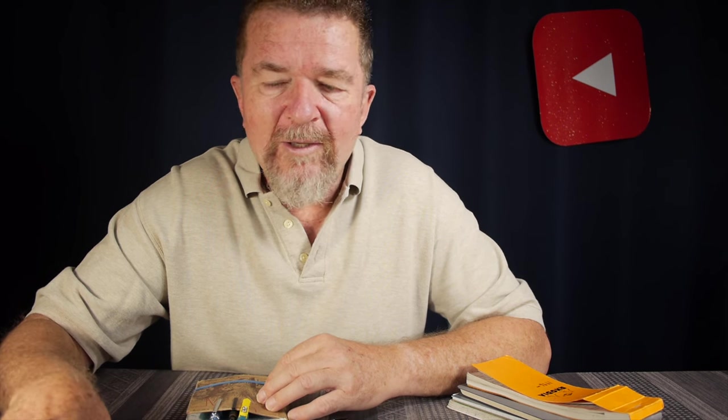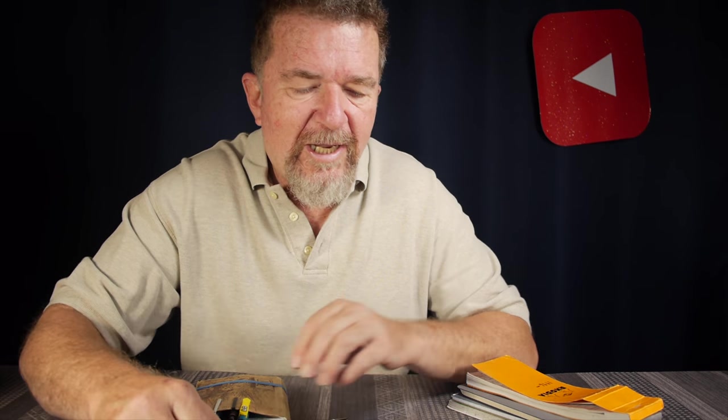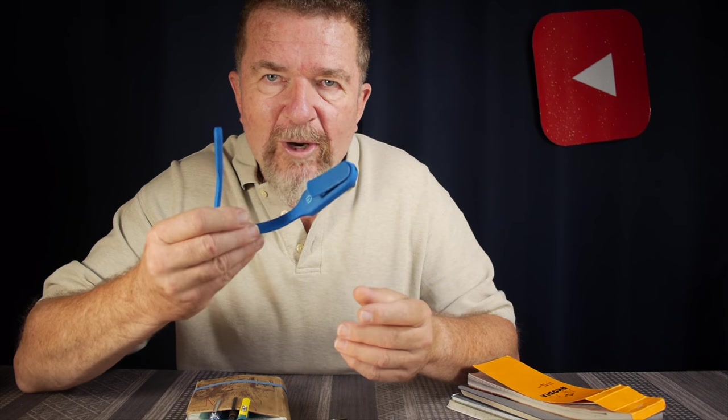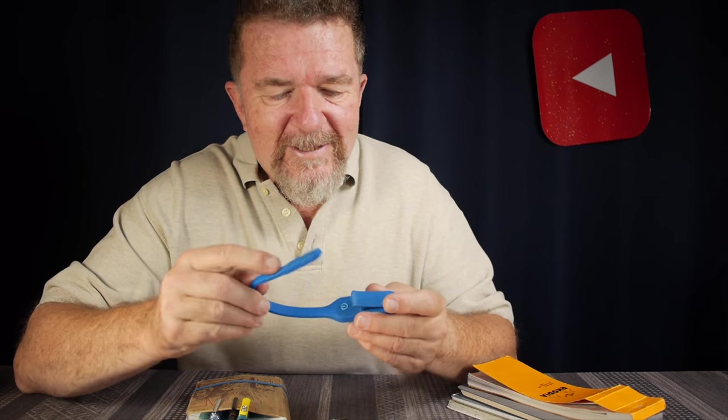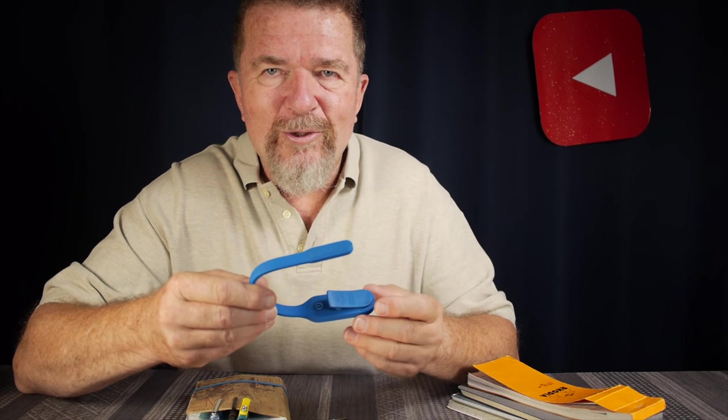Then what happened was yesterday, we went over to one of our local bookstores. This is Page One Books in Albuquerque. I had ordered a book online and while I was there, I found this nifty little Mighty Bright book light. And this is kind of the heart of my new nightstand jotter system.